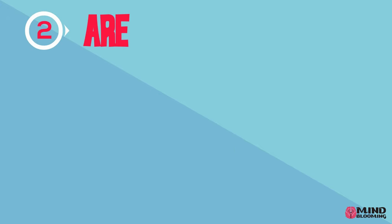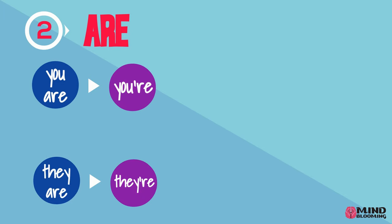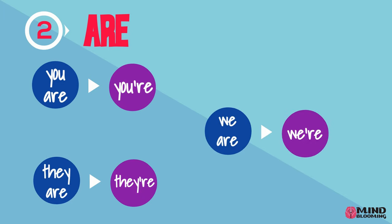What about the word are? When I want to combine two words with the word are in it, I drop the letter A and add an apostrophe. So you are will be you're. They are will be they're. We are will be we're.